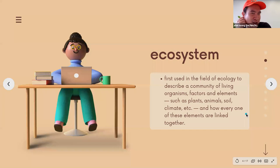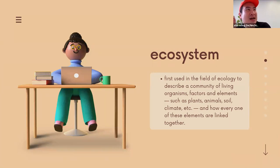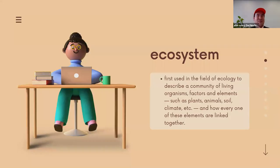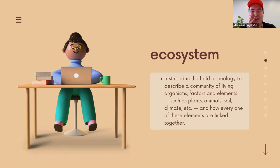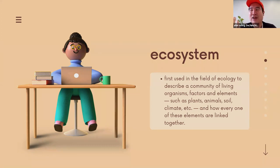So, what is an ecosystem? If we go back to the days of middle school, what is an ecosystem? It was first used in the field of ecology to describe a community of living organisms, factors, and elements — such as plants, animals, soil, climate, and how these elements are always linked together.